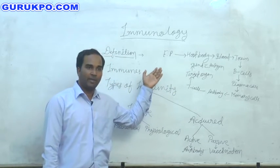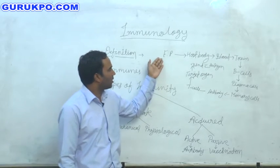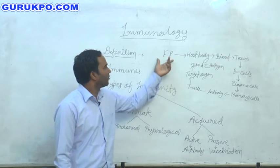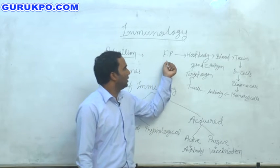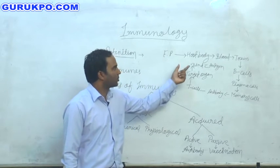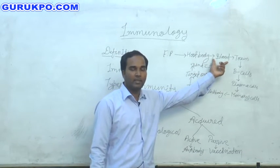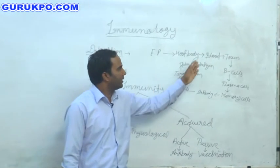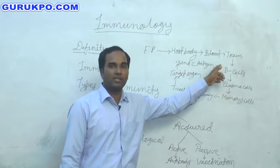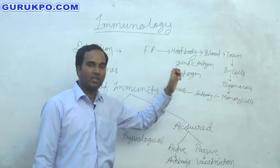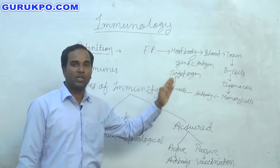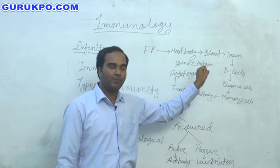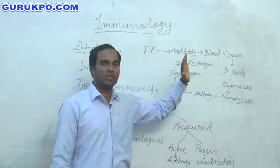When a foreign particle comes into the host body, what happens in the host body? The foreign particle mixes in the blood, then plays its biological activity and releases some toxin. This toxin affects the host body on a very large scale.